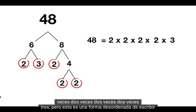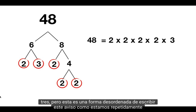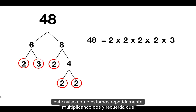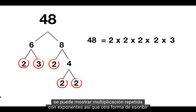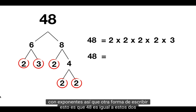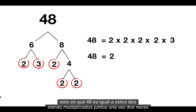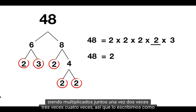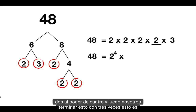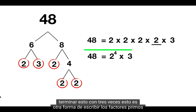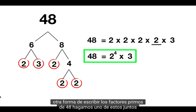But this is a messy way of writing this. Notice how we are repeatedly multiplying 2, and remember that repeated multiplication can be shown with exponents. So another way of writing this is that 48 is equal to these 2s being multiplied together once, twice, 3 times, 4 times — so we write it as 2 to the power of 4. And then we finish this with a times 3. This is another way of writing the prime factors of 48.